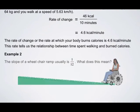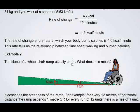Example 2. The slope of a wheelchair ramp is usually 1 over 12. What does this mean? Well, it means that for every 1 unit of rise, there's going to be 12 units of run. This is important, because most wheelchair ramps have to be built to specific situations that can help people out who are in wheelchairs. It describes the steepness of our ramp in this situation.